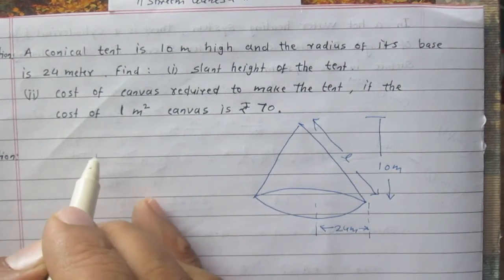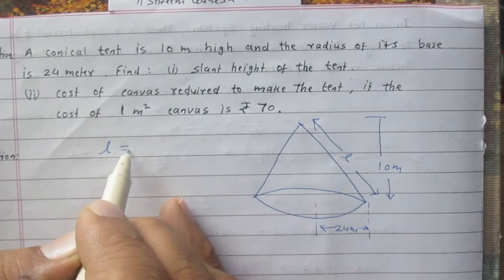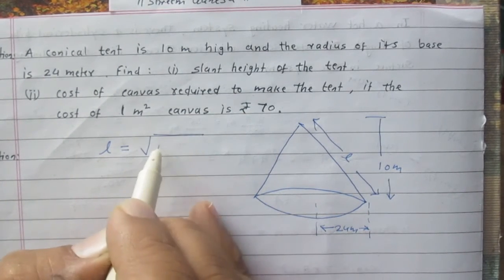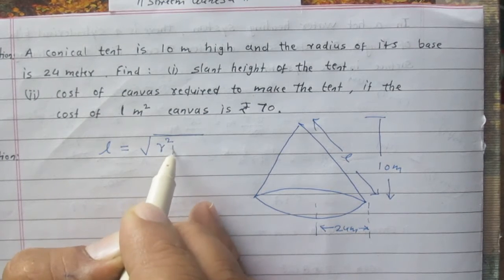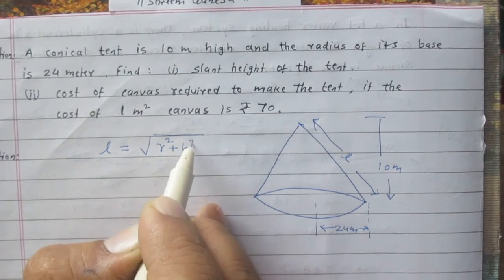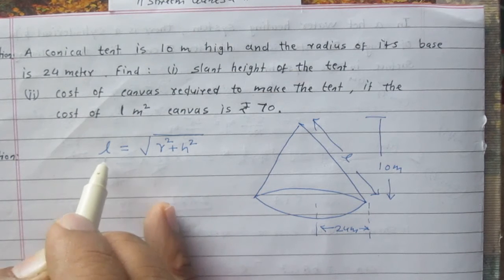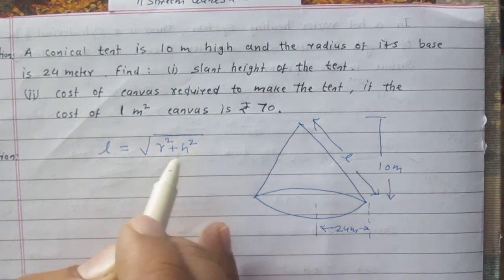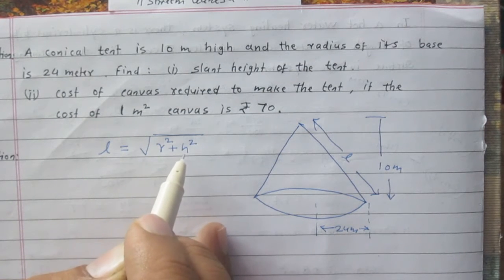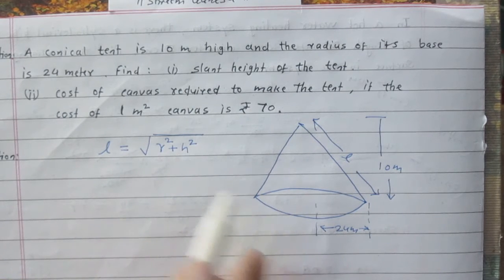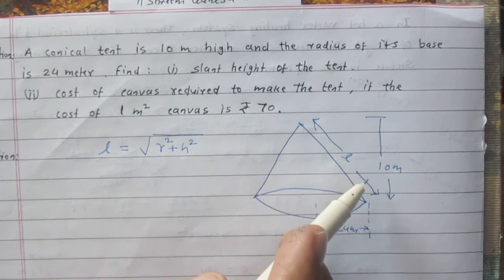According to the formula, slant height of a cone is square root of sum of square of radius and square of height. So we can say that l is equal to square root of r square plus h square, where r is the radius of the base of the cone and h is the vertical height of this cone.